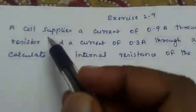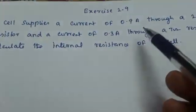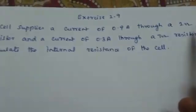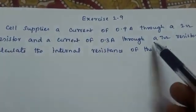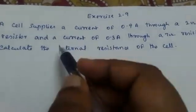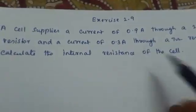Exercise 2.9: A cell supplies a current of 0.9 ampere through a 2 ohm resistor and a current of 0.3 ampere through a 7 ohm resistor. Calculate the internal resistance of the cell.